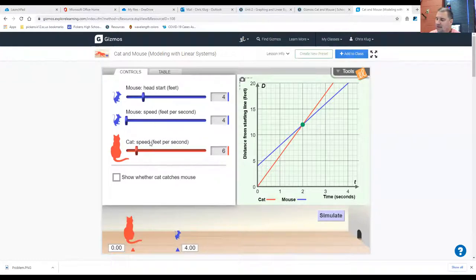Of course, you see the mouse and the cat are both running here, right? What are they both doing? They're moving away from the starting line. The cat's at the starting line. The mouse is already a little bit away. They're both moving away from the starting line and they're moving away from the starting line at a constant speed, right?